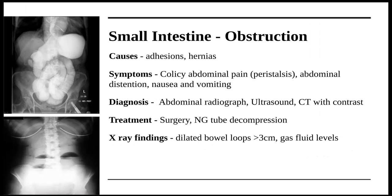For small intestine obstruction, the most common causes are adhesions and hernias. Symptoms include colicky abdominal pain — this is due to peristalsis; when the peristaltic wave passes the point of obstruction the patient feels pain, and when it passes beyond the obstruction the pain is relieved. There is also abdominal distension, nausea, and vomiting. Diagnosis is done by abdominal radiograph, ultrasound, and CT with contrast. It is usually treated with NG tube decompression or surgery.